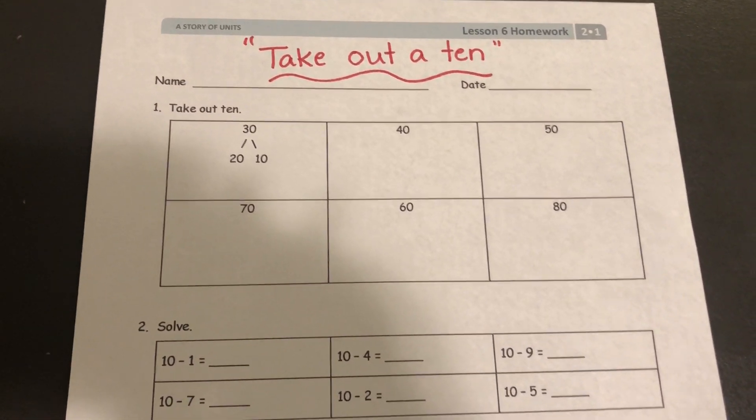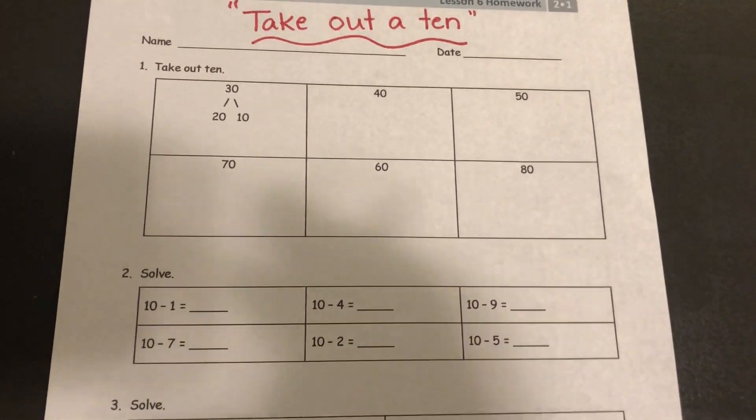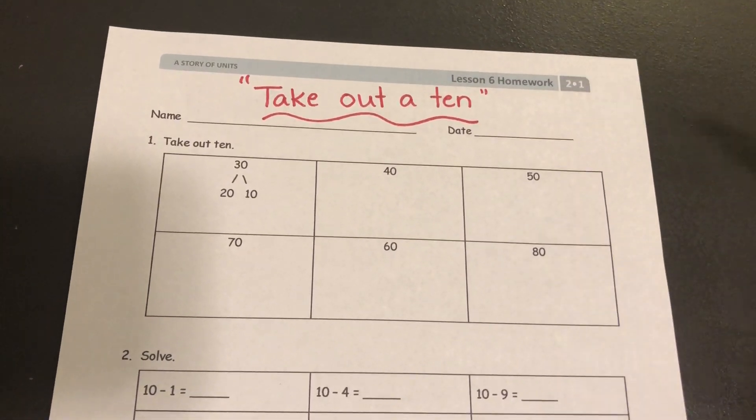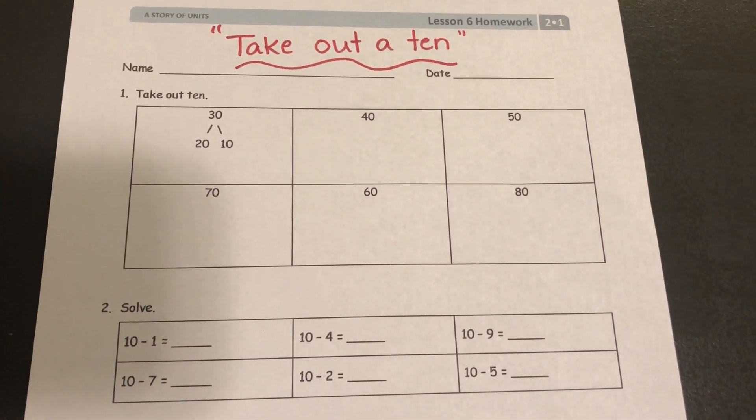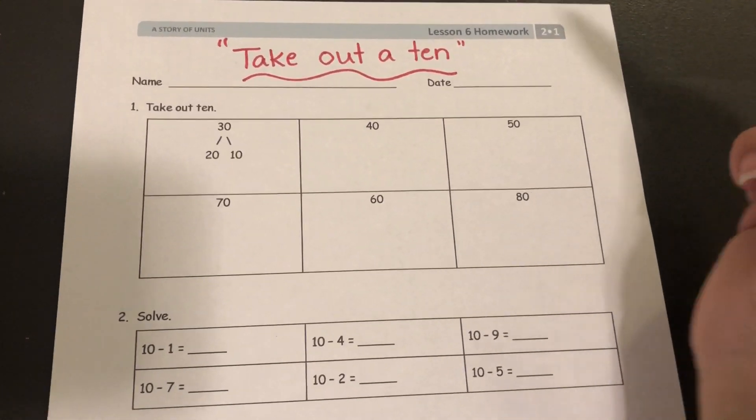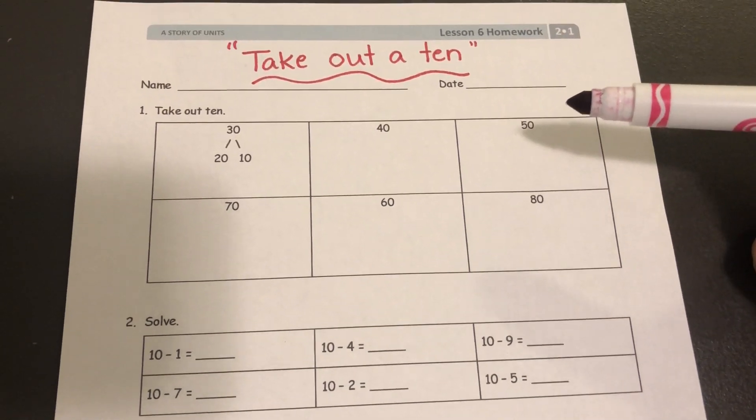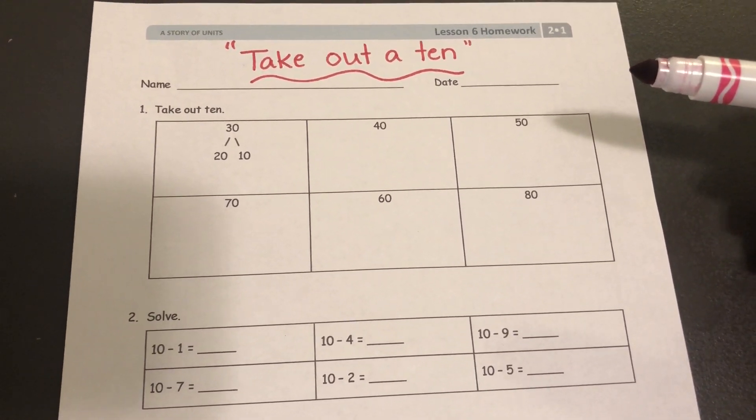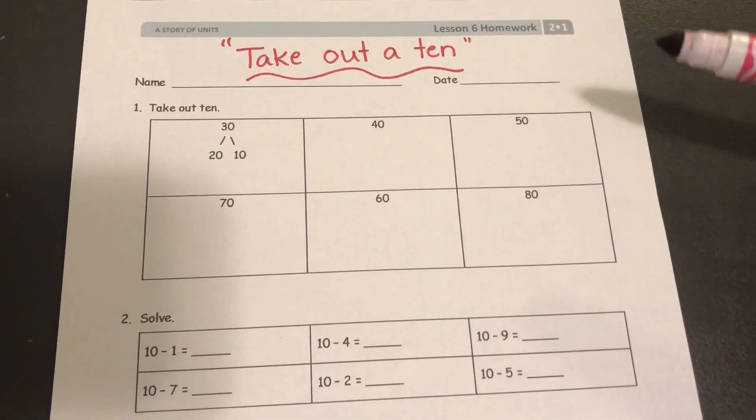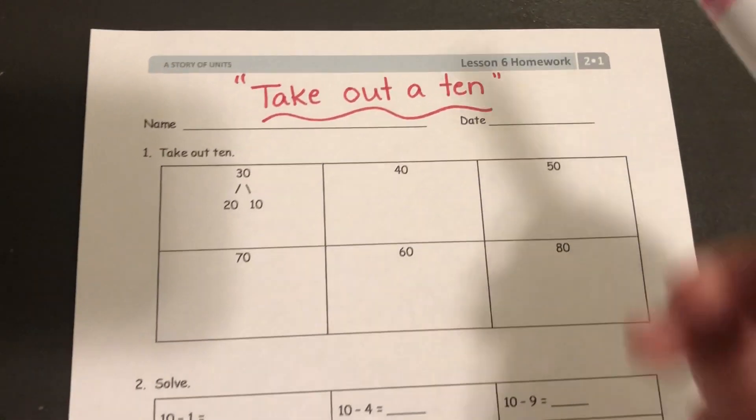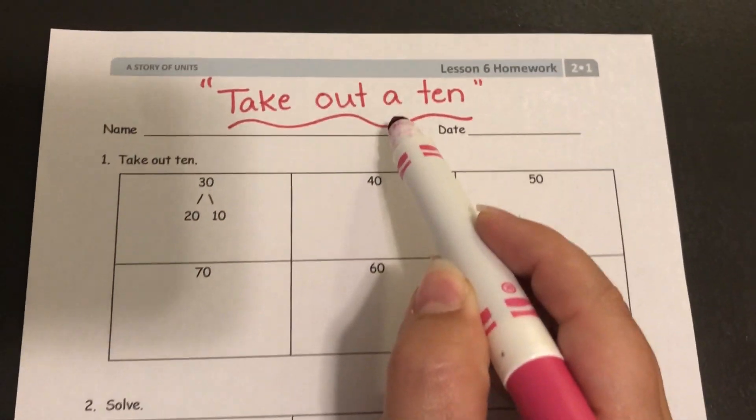Hey boys and girls! Today we're working on module 1 lesson 6 homework and we're learning a new strategy for subtraction. Eventually you'll be doing subtraction in what's called the standard algorithm, but we're going to be learning a few other strategies before we get there. Today's strategy is called take out a ten.